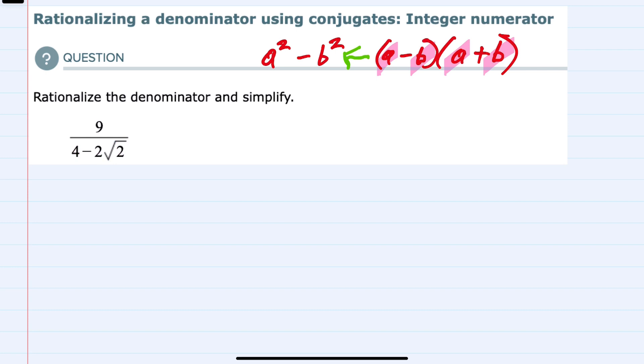What I would like to do is multiply this denominator, 4 minus 2 square roots of 2, by the conjugate 4 plus 2 square roots of 2. And since this is a fraction, I can multiply the denominator by that,